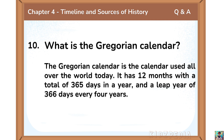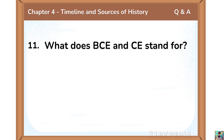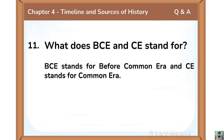The Gregorian calendar is the calendar used all over the world today. It has 12 months with a total of 365 days in a year and a leap year of 366 days every 4 years. BCE stands for Before Common Era and CE stands for Common Era.